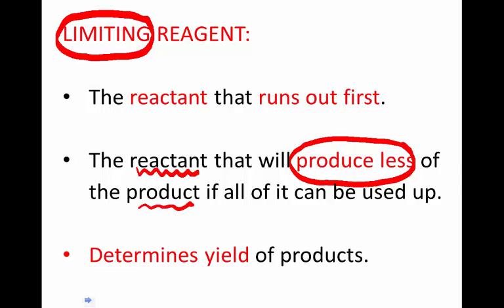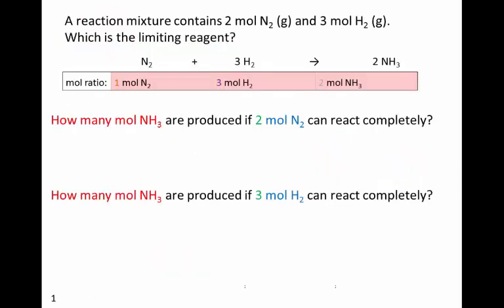So we write two sub-questions for ourselves. How many moles of ammonia are going to be produced if all of the nitrogen that we have, which is 2 moles, is used up?